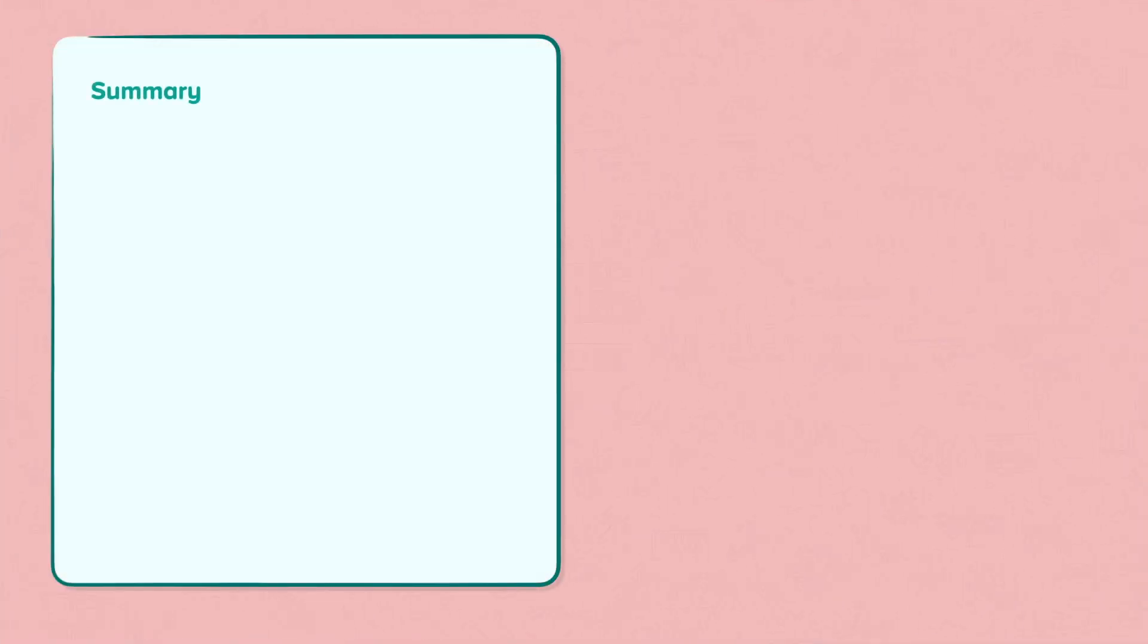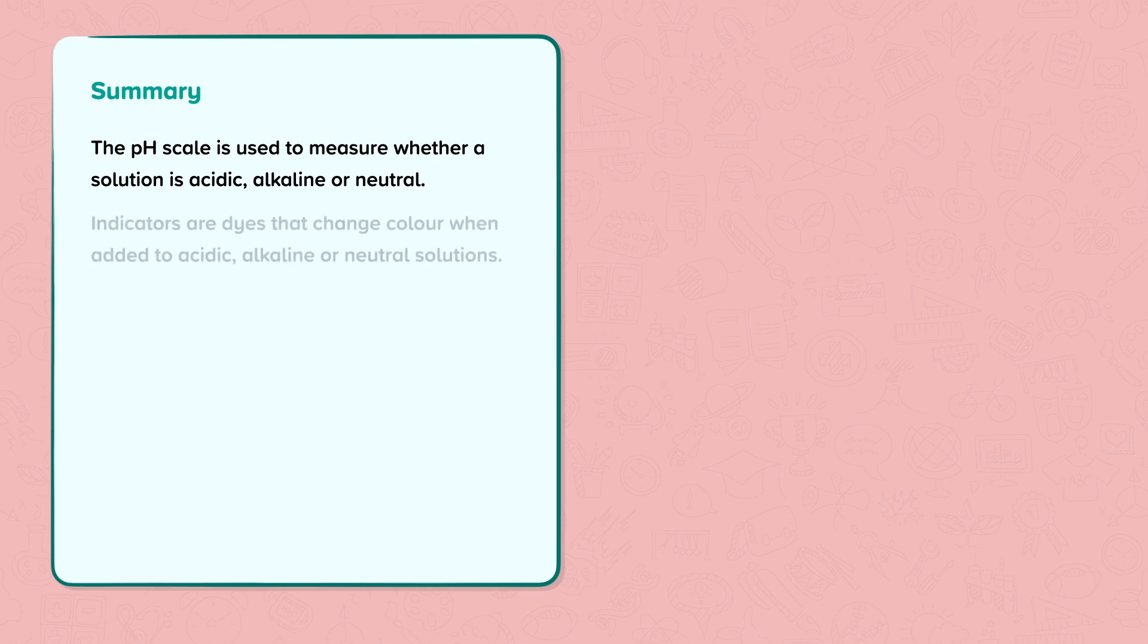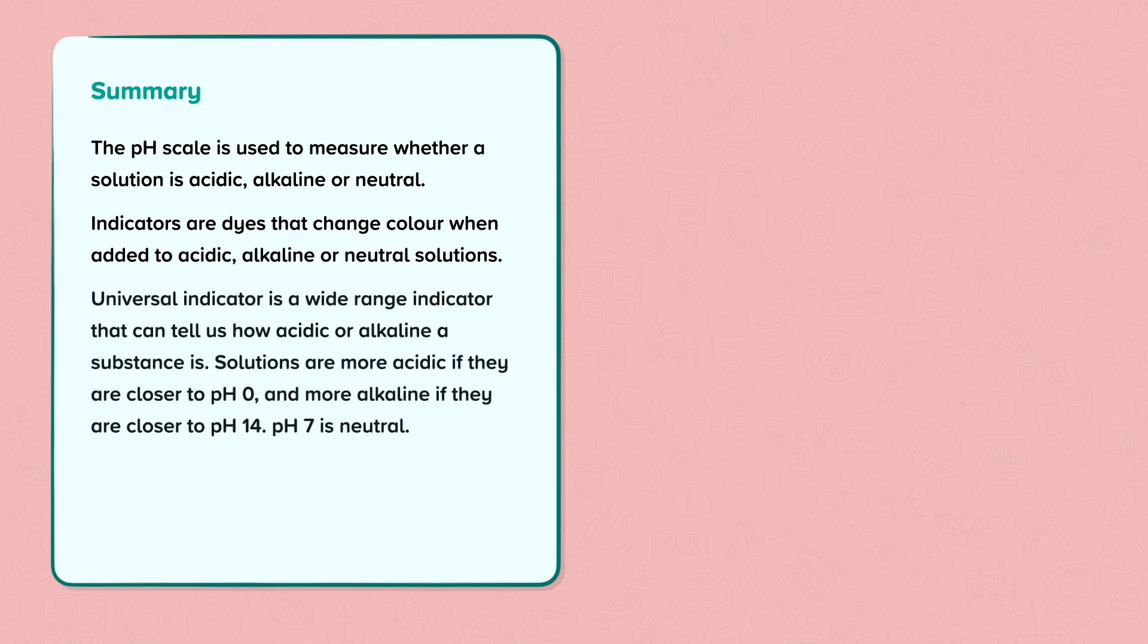Summary: The pH scale is used to measure whether a solution is acidic, alkaline or neutral. Indicators are dyes that change color when added to acidic, alkaline or neutral solutions. Universal indicator is a wide range indicator that can tell us how acidic or alkaline a substance is. Solutions are more acidic if they are closer to pH 0 and more alkaline if they are closer to pH 14. pH 7 is neutral.